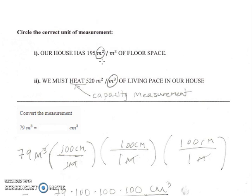Our house has 195 meters squared of floor space. Heat is a capacity measurement, so if we're trying to fill a living space with a certain amount of heat, we're interested in how much volume there is in that living space. So we would say we must heat 520 meters cubed of living space in our house.